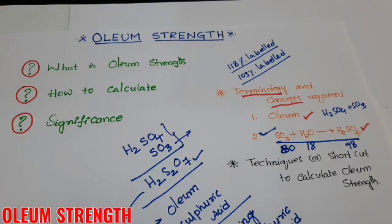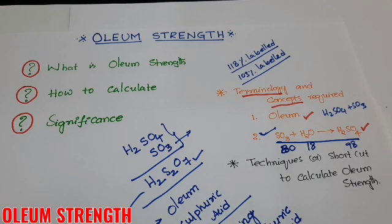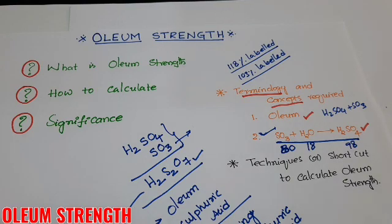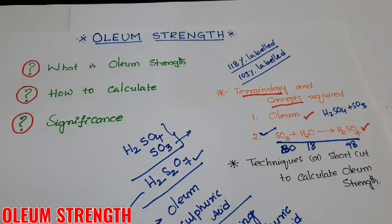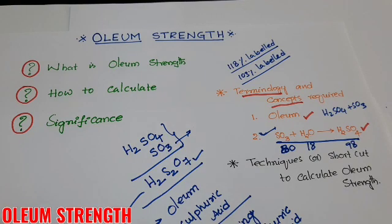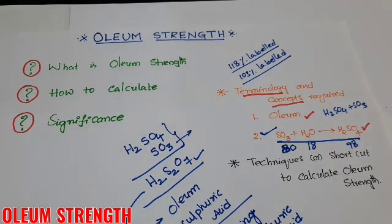To know the percentage of SO₃ in oleum, we use the concentration term called volume strength. To calculate volume strength, students must know the central reaction: 80 grams of SO₃ reacts with 18 grams of water to form 98 grams of sulphuric acid. The concentration term expressing the percentage of SO₃ in oleum is called volume strength.